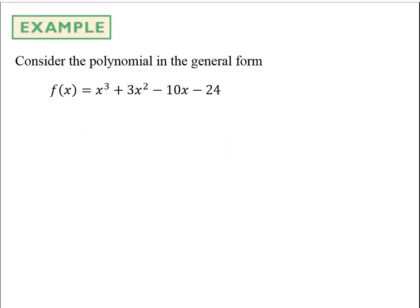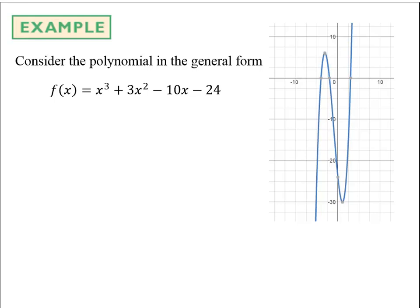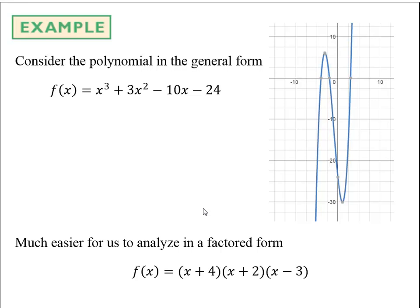The third tool of analysis is zeros, which are really x-intercepts. Consider a polynomial in expanded form — its graph has x-intercepts at negative 4, negative 2, and 3. In factored form, we can see these directly: negative 4 makes the first factor zero, negative 2 makes the second factor zero, and 3 makes the third factor zero. The factored form makes x-intercepts immediately visible, so it's much easier to analyze.